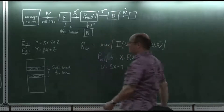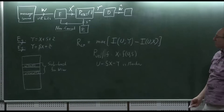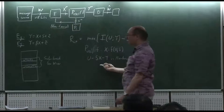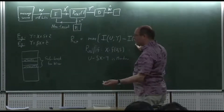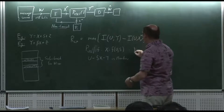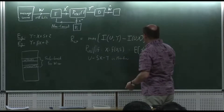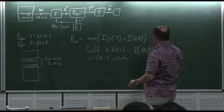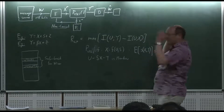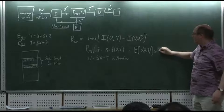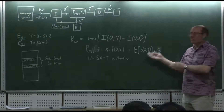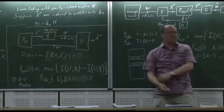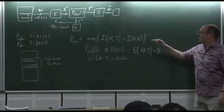The Gelfand-Pinsker capacity is a maximization over P(U|S) and function f with X = f(U,S), subject to U → S → X → Y being Markov. If there's a power constraint, we add E[cost(X)] ≤ P. The form is the same as Wyner-Ziv but with maximization instead of minimization, because encoding involves both selecting a sub-codebook and vector quantization simultaneously.